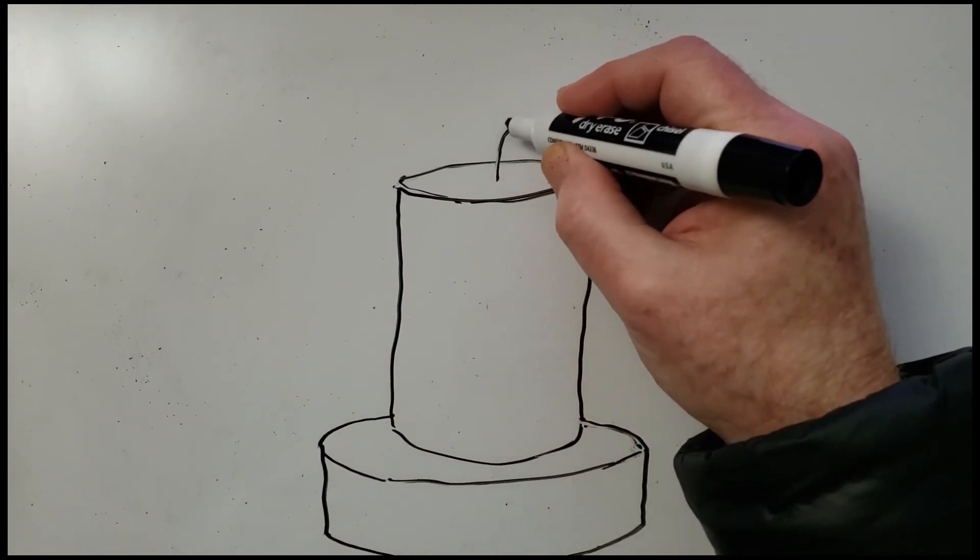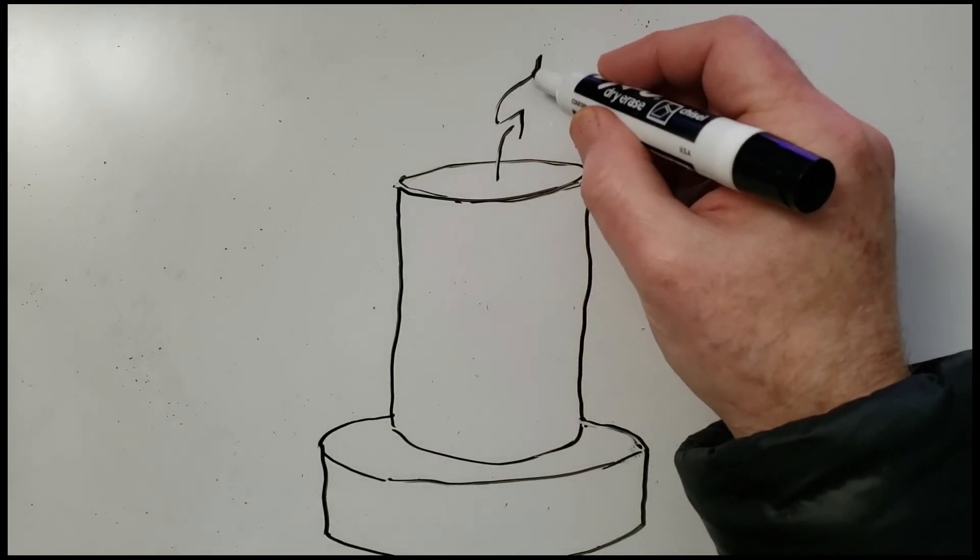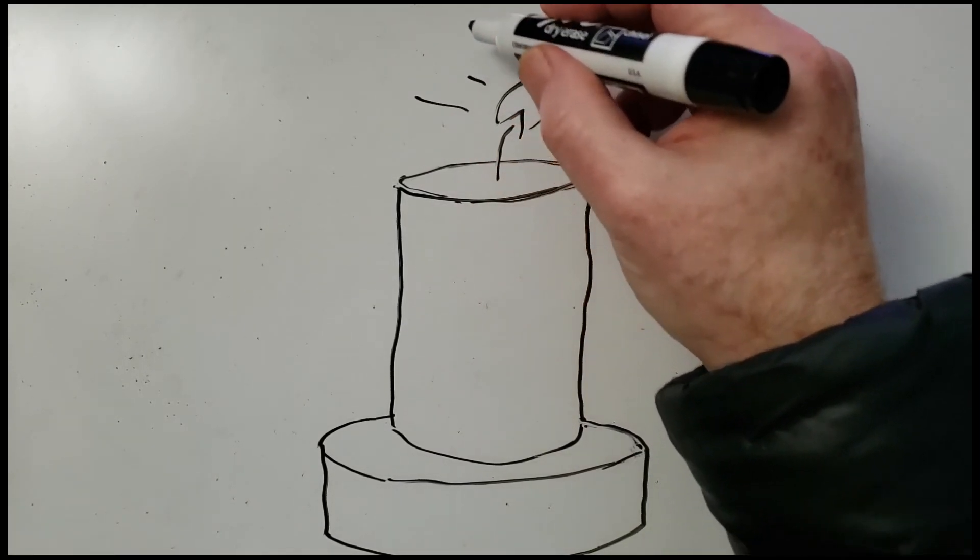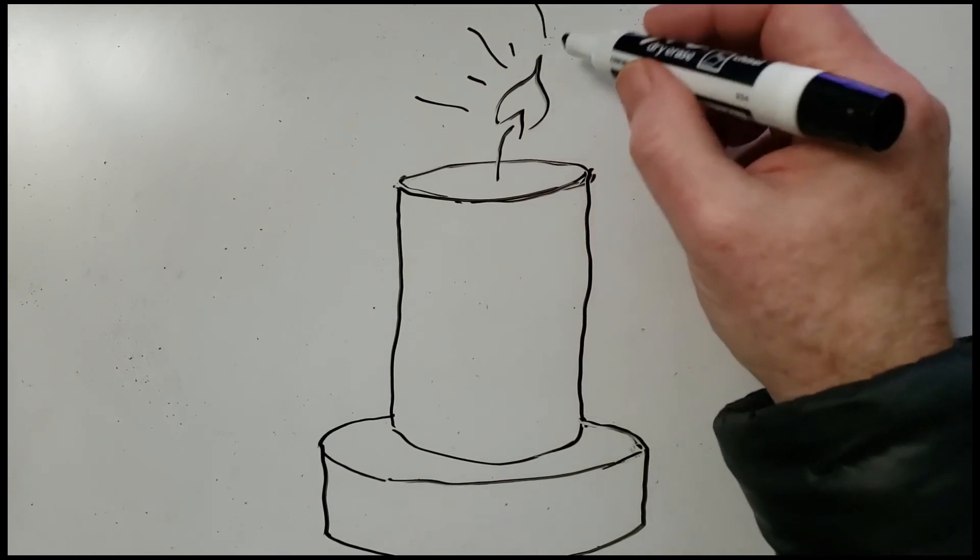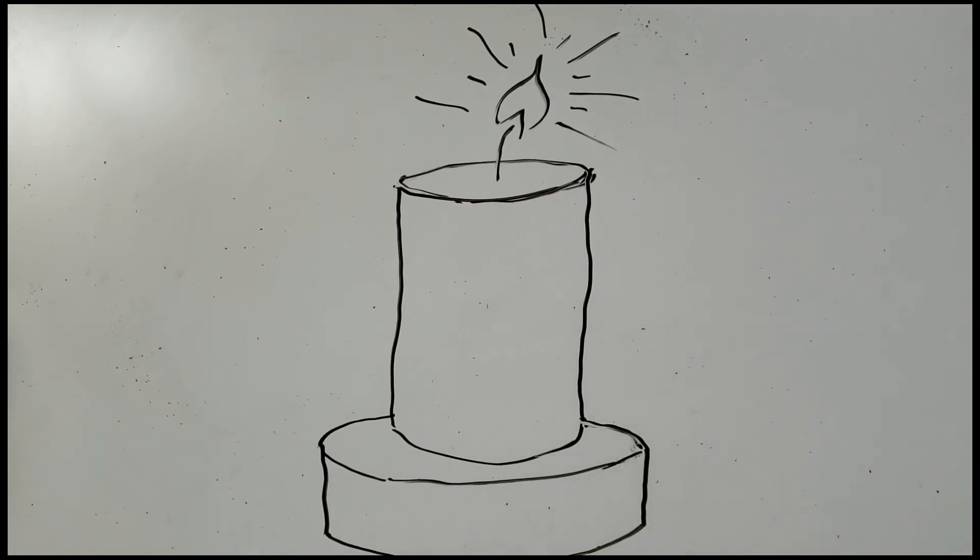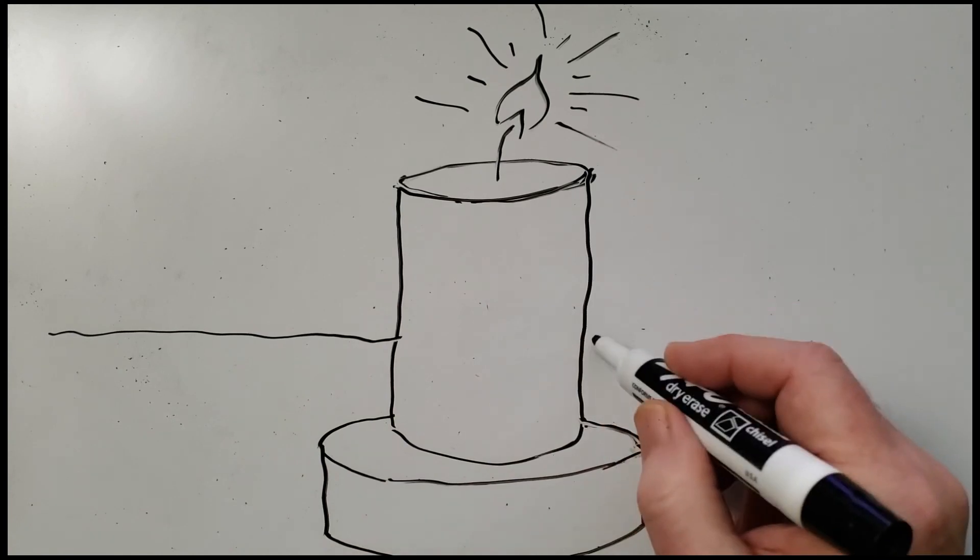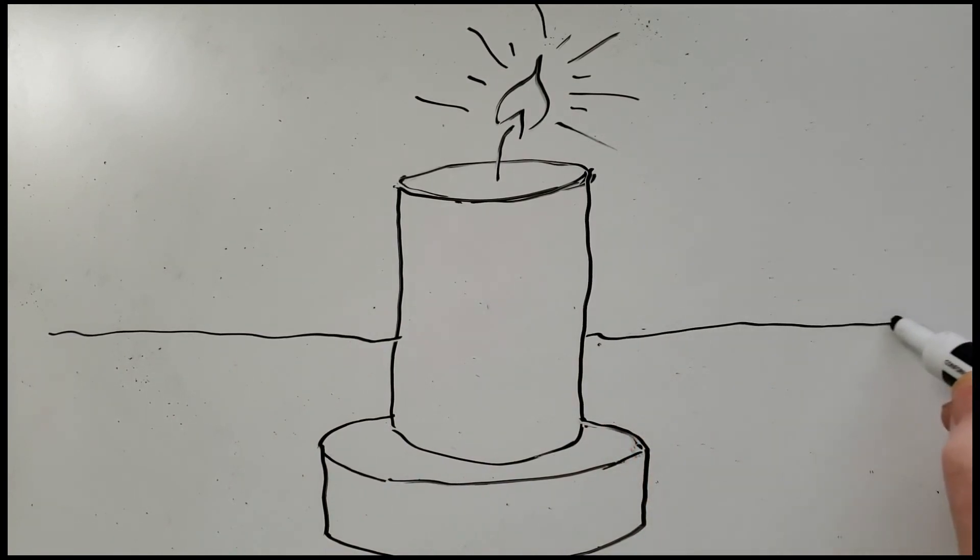Let's put a wick on there. A wicked little candle. Draw a flame. And I like the way he does the sparkle lines at the top. And a horizon line in the background, so that we know it's sitting on a table. All right. You crazy kids, knock yourselves out. And I will draw with you next week.